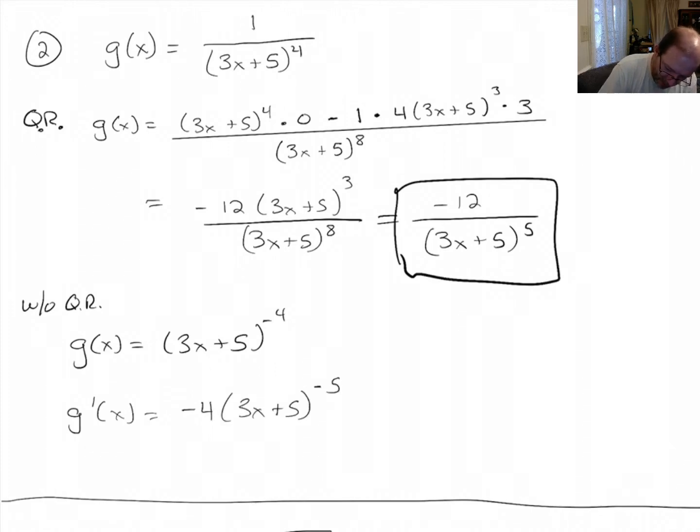You get minus 4 times (3x + 5) to the minus 5. And then chain rule says you have to multiply by 3. So you can combine that together and get minus 12 times (3x + 5) to the negative 5. Let's move that downstairs.